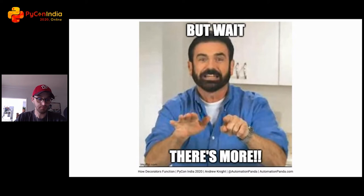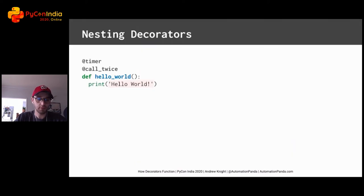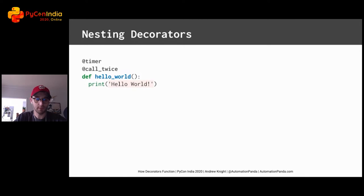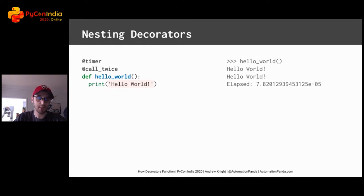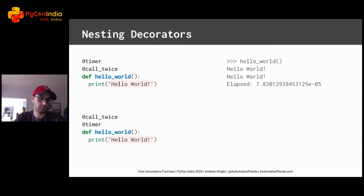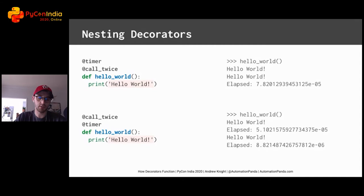You can also add more than one decorator to a function — this is called decorator nesting. Order matters. Decorators are executed in the order of closeness to the inner function. In this case, with these two decorators, call-twice is applied first, and then timer is applied. If these decorators are reversed in order, then each inner function call is timed.